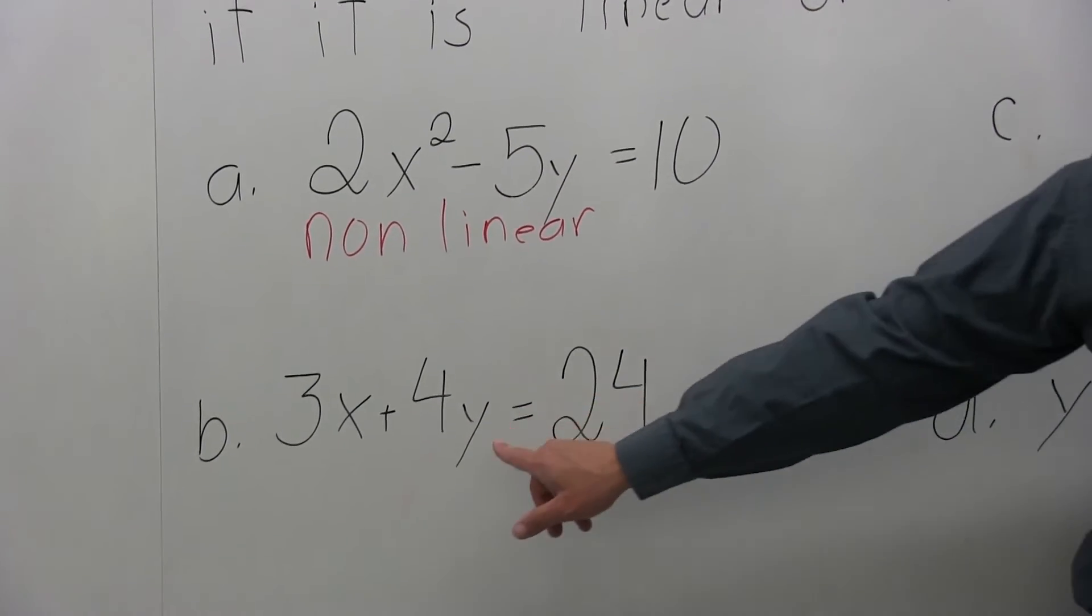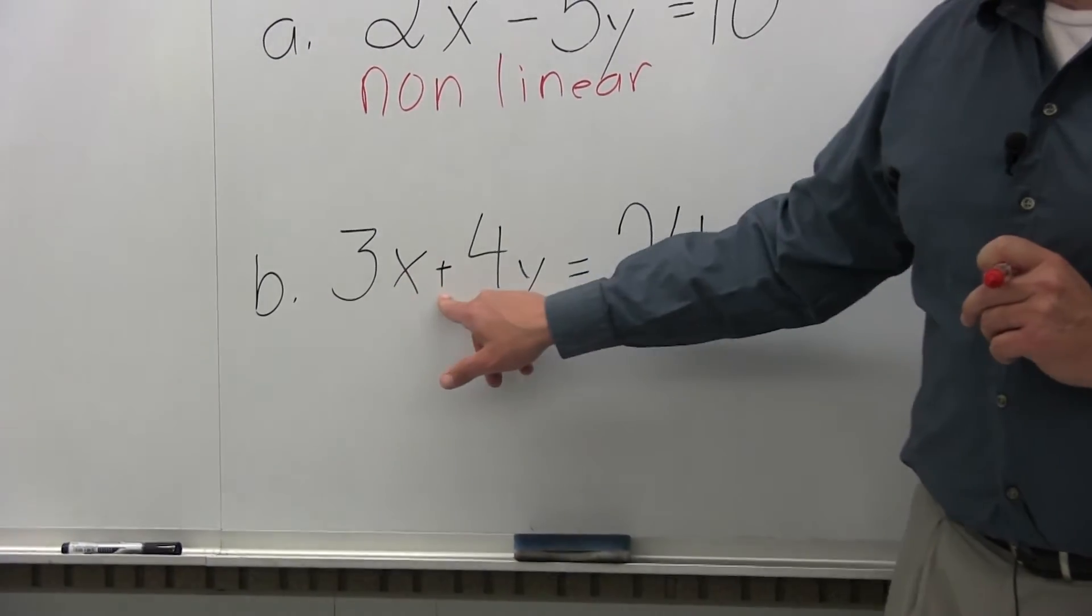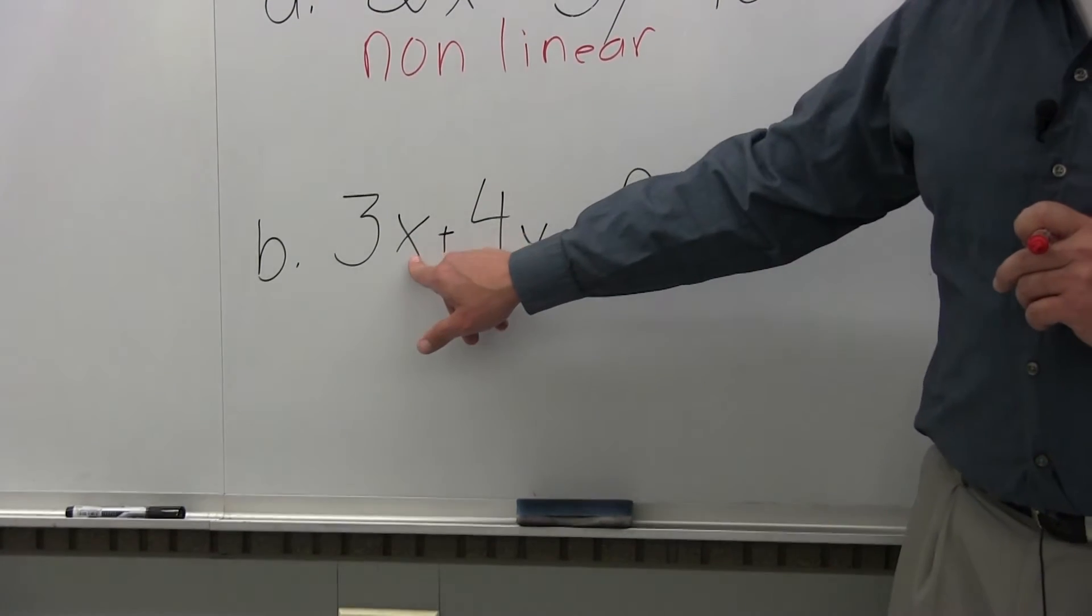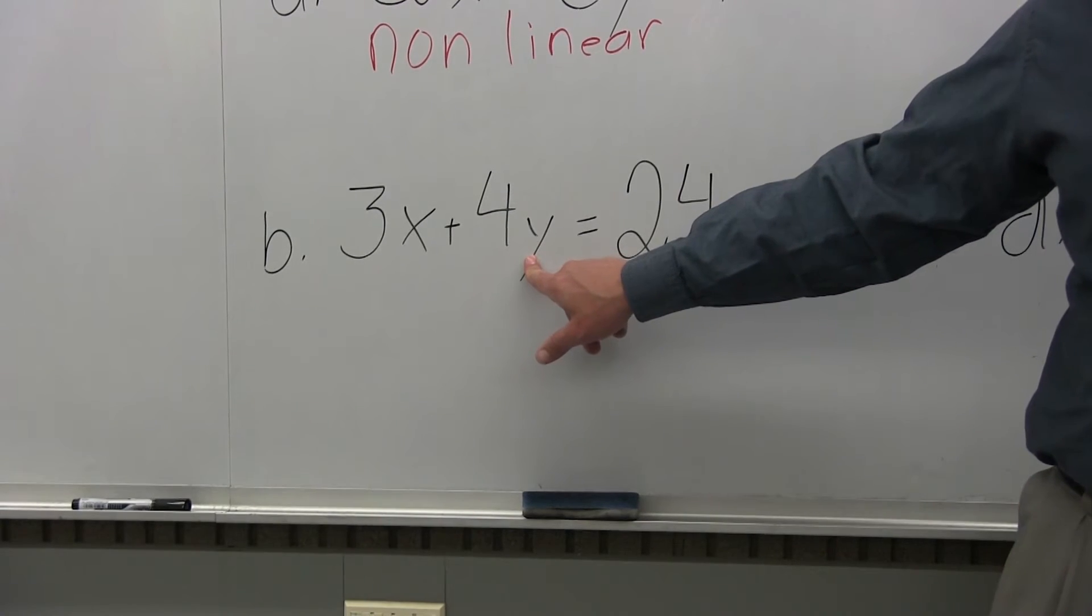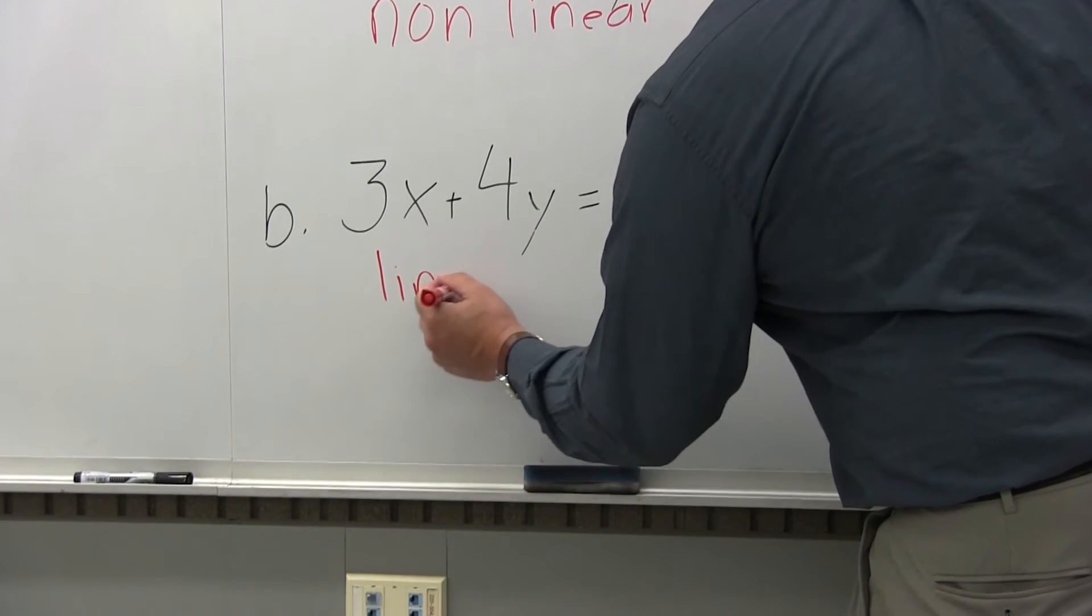Same question for part B. Is this linear or non-linear? y equals 2 to the x power. So the variable is up in the exponent.